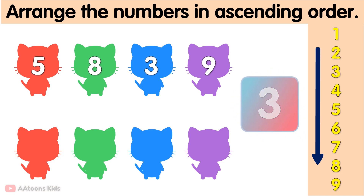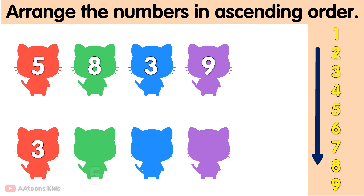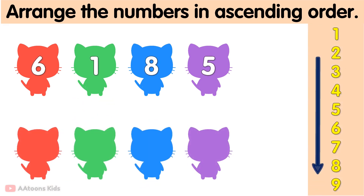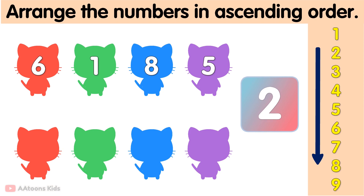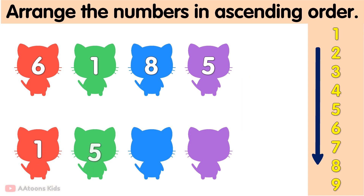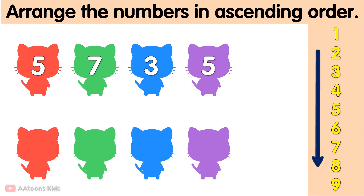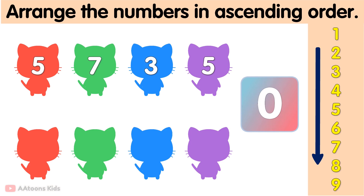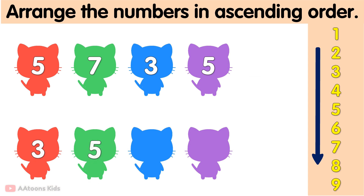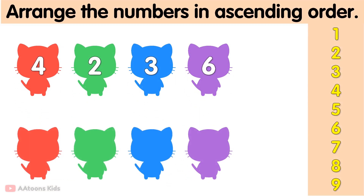Arrange the following numbers in ascending order: 3, 5, 8, 9. The ascending order is 3, 5, 8, 9. Arrange the following numbers in ascending order: 3, 5, 6, 8, 9. Arrange the following numbers in ascending order: 3, 5, 5, 7, 9.